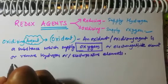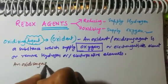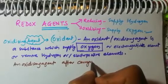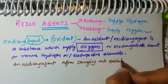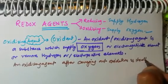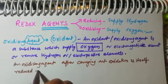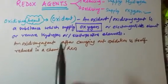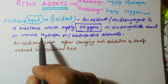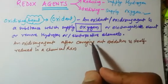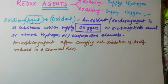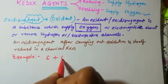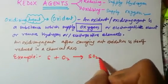An oxidizing agent, after carrying out oxidation, is itself reduced in a chemical reaction. For example, in the reaction sulfur + O₂ → SO₂, this is an oxidation reaction. Oxygen is providing oxygen to sulfur, so oxygen is the oxidizing agent here.